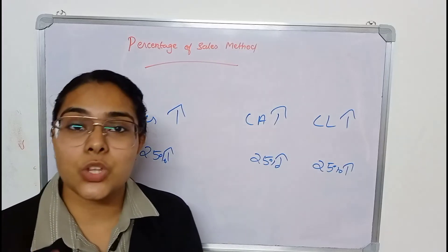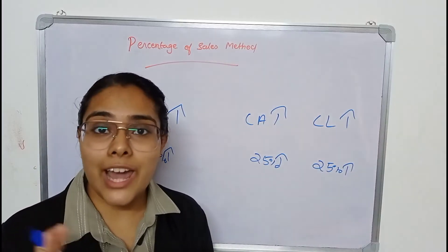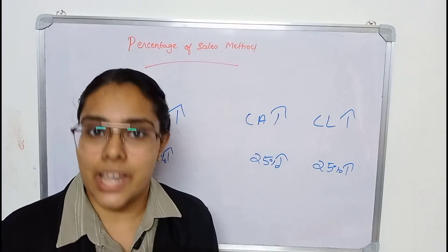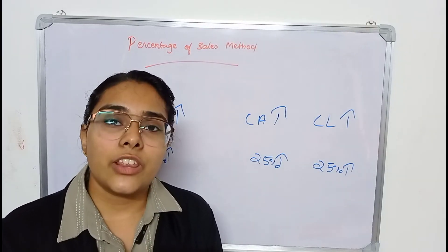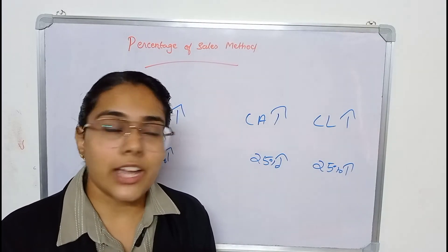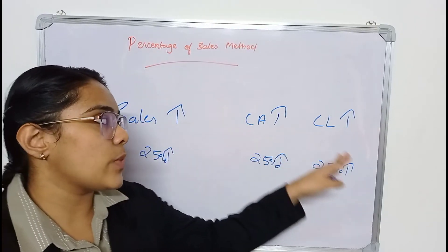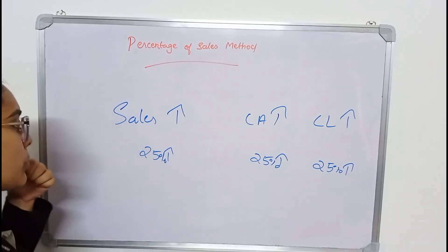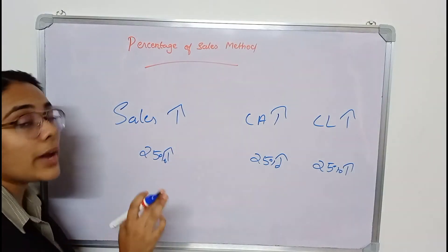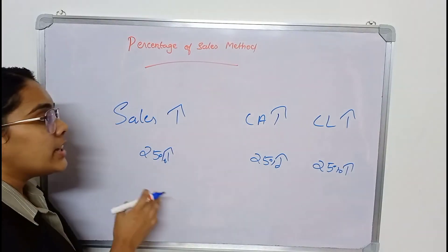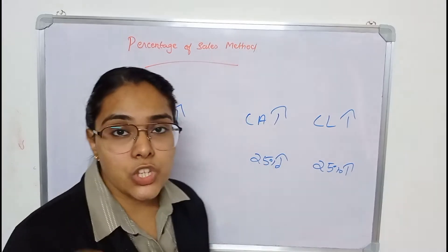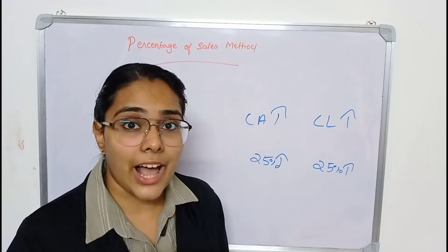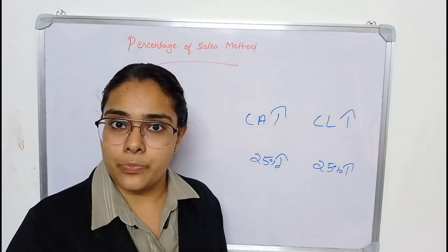The calculation you have to do is: first estimate the percentage change that has been brought in sales, and then with that percentage you have to find out current assets as well as current liabilities individually. For example, if sales have increased by 25%, you have to take each item of current asset, find 25% of that, and then add it up.